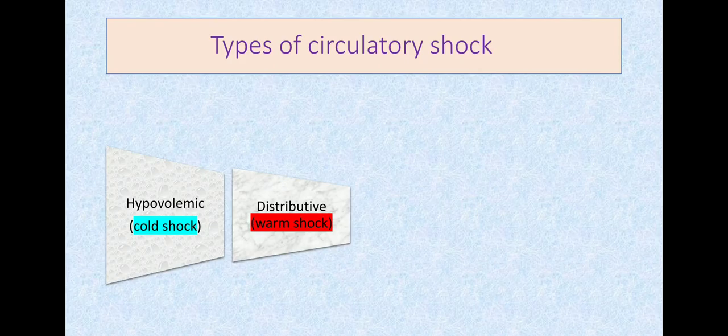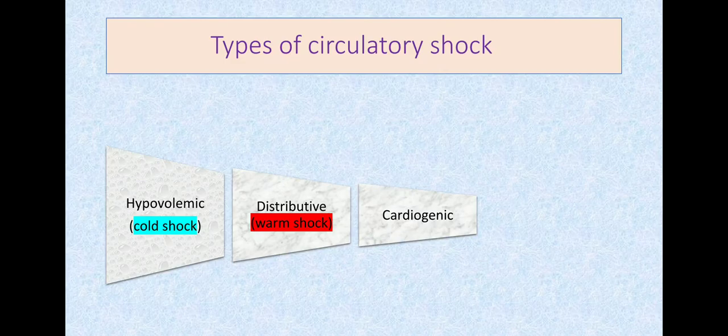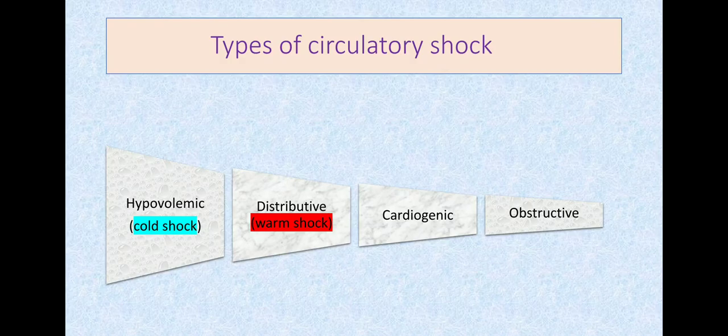You can get questions on cold shock versus warm shock. Cold is hypovolemic, distributive is warm. Third type: cardiogenic—some problem in the heart. Obstructive shock: heart is normal, blood volume is normal, vascular tone is normal, but there's obstruction to forward blood flow. These are the types of circulatory shock.